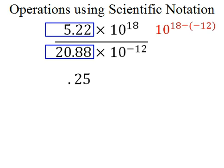So each power has an identical base of 10, so we're just going to subtract 18 and negative 12. And that's going to be positive 30. So the second half of our answer is going to be 10 to the 30th power.